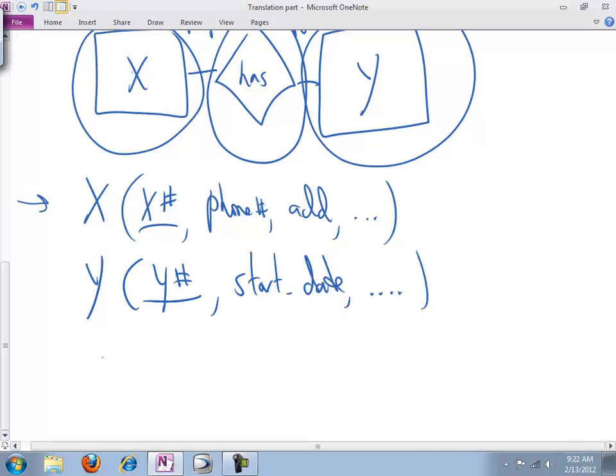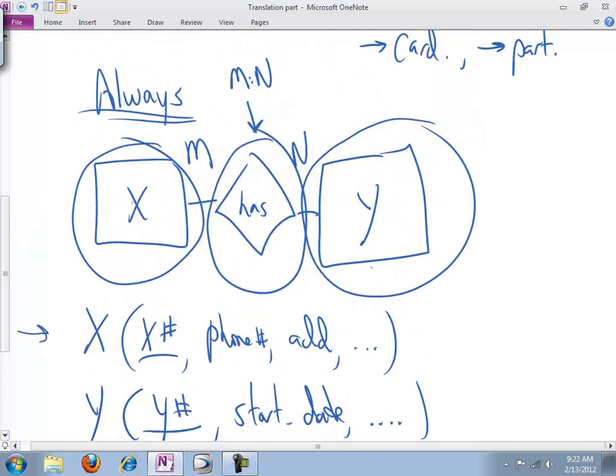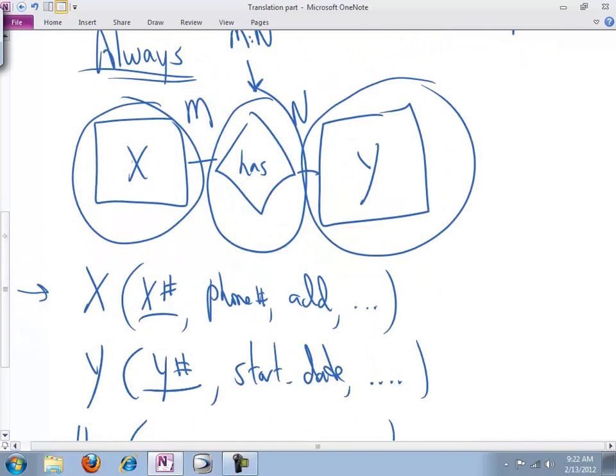Then we have the interesting case of the 'has' table. The primary key of a relationship is going to equal one, the other, or both of the primary keys of the participating relationships, depending on cardinality. Here's the question to ask yourself with regard to 'has': for a given instance of the has relationship, can it be the case that we could uniquely identify this relationship with only the Y number attribute? Can we do Y number alone?